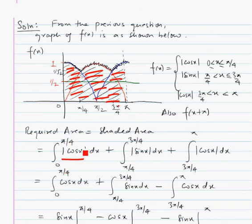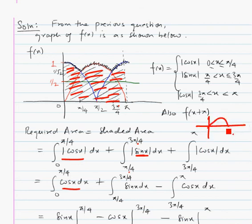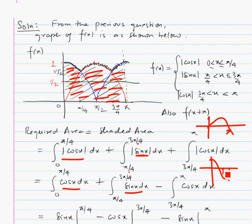Cos x is positive from 0 to π by 4, so we can remove the mod. In the interval π by 4 to 3π by 4, sin x is positive — sin x is positive between 0 and π — so we can remove the mod. From 3π by 4 to π, cos x is negative, so to remove the mod we put a negative sign in front of it. After that, we simply integrate all three functions and substitute the values to get the area.